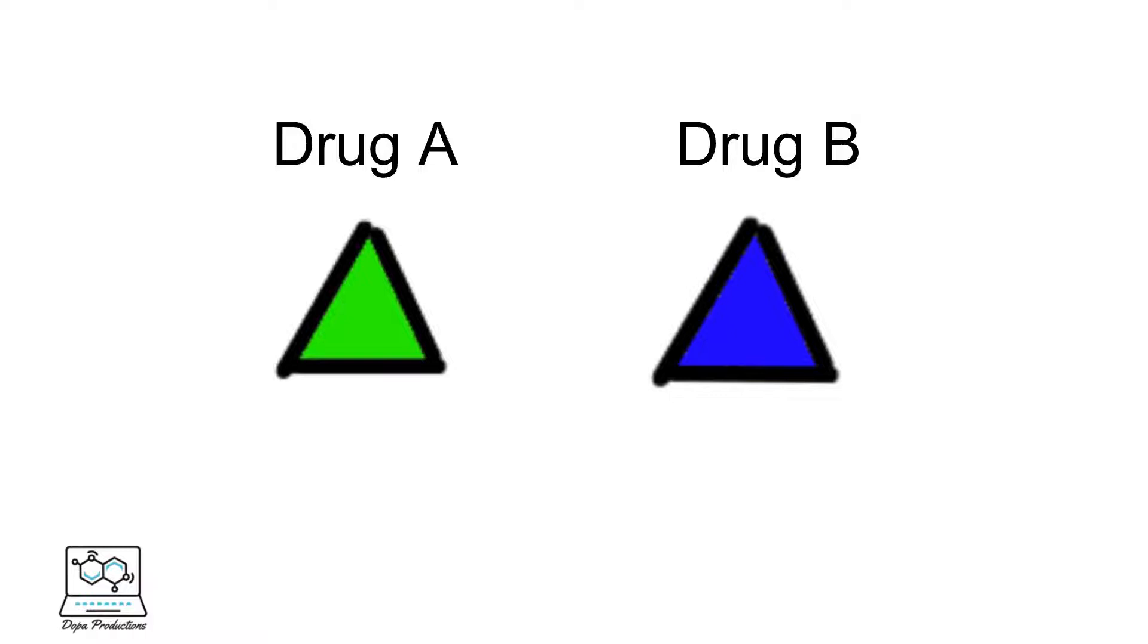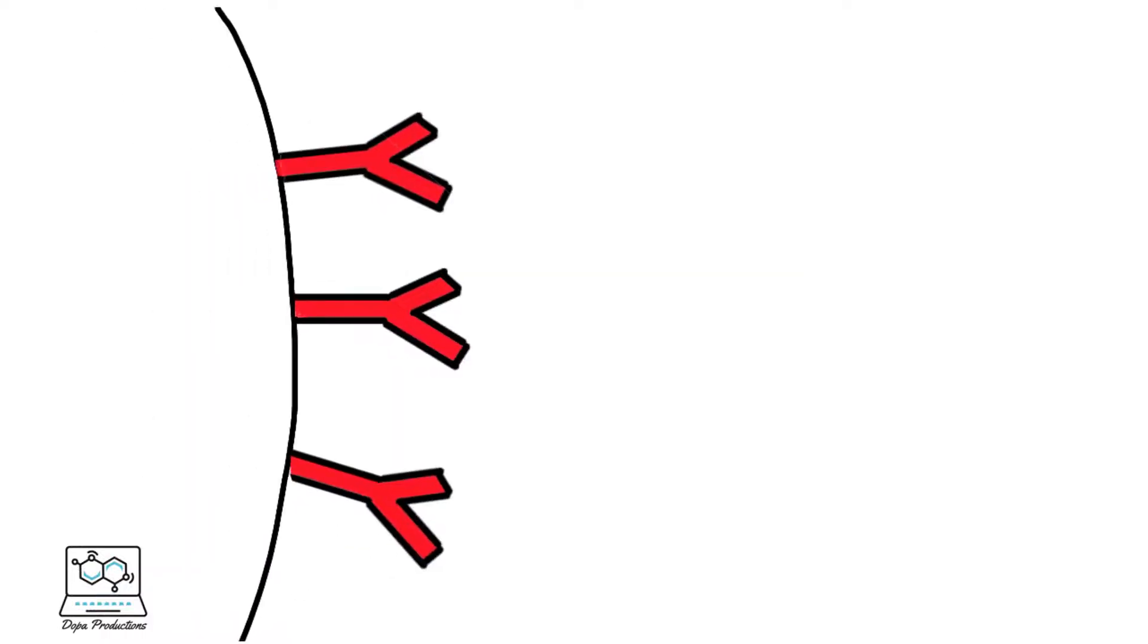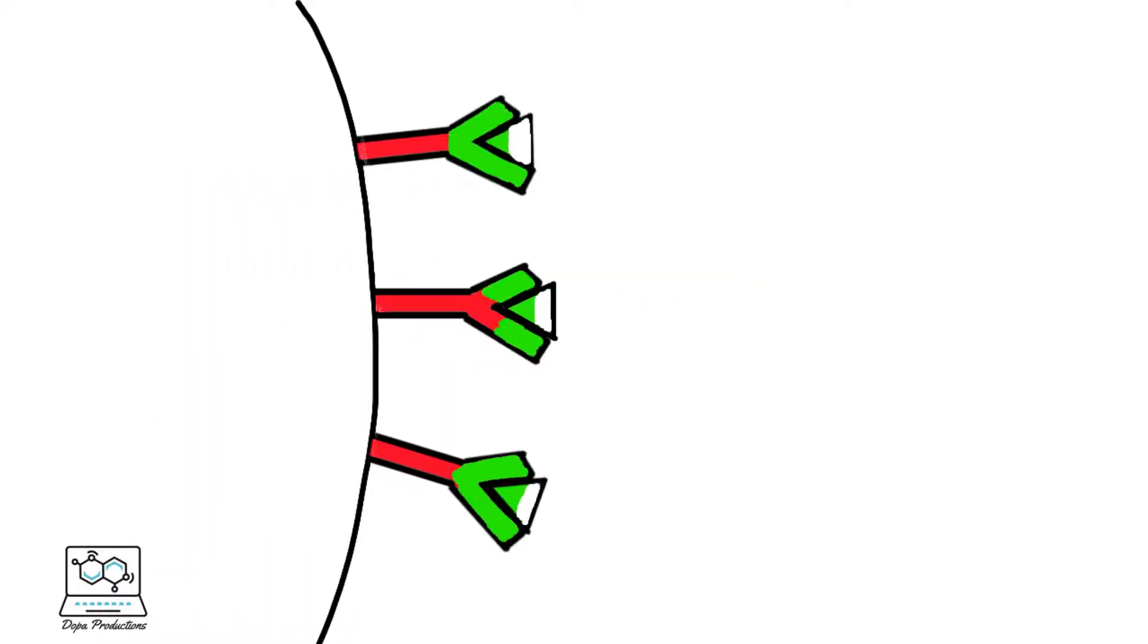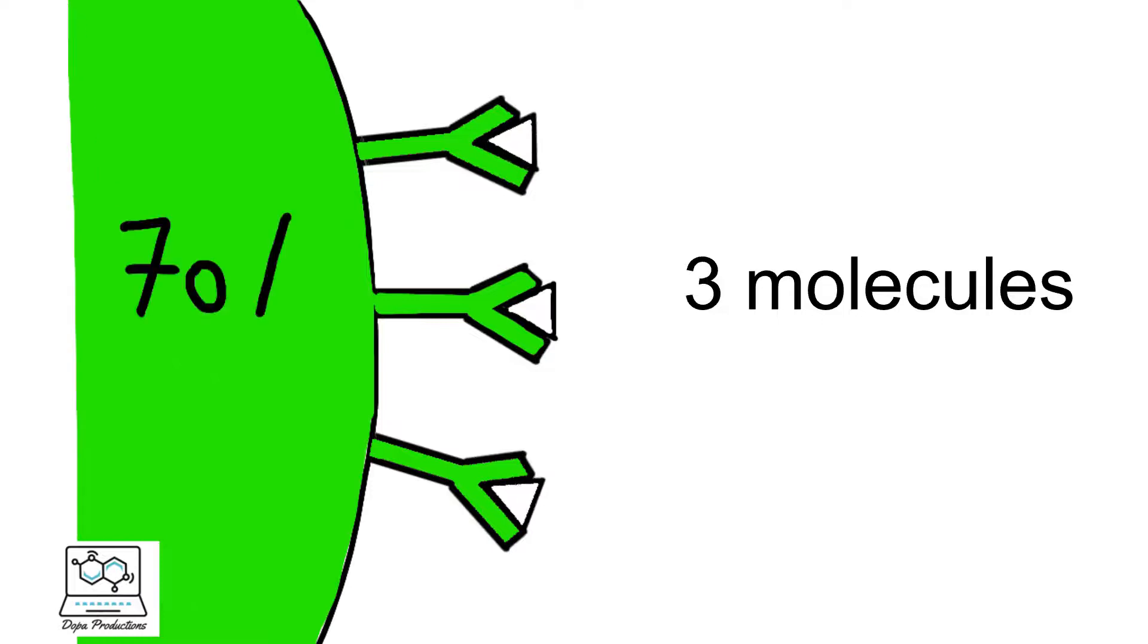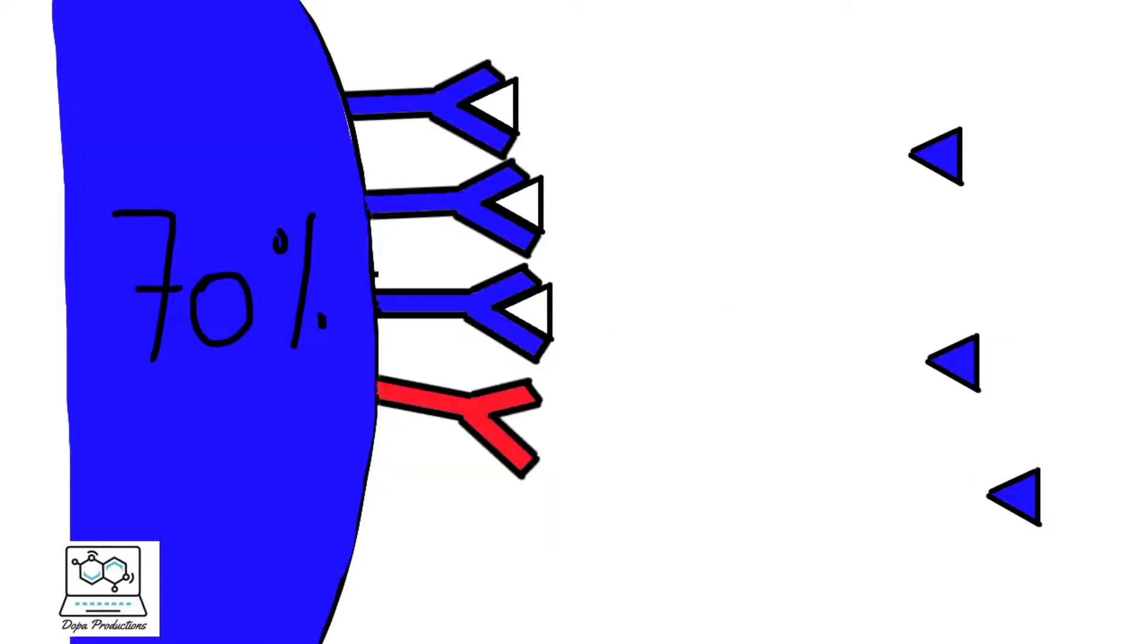Let's suppose we have two drugs, drug A and drug B. Drug A induces a 70% effect with only 3 molecules. Drug B induces the same 70% effect with 6 molecules.